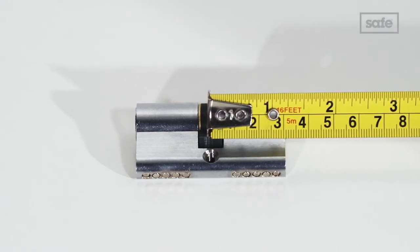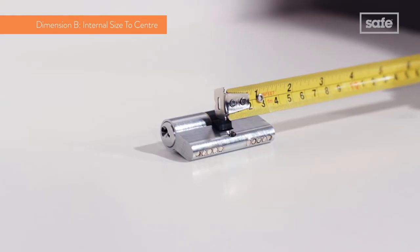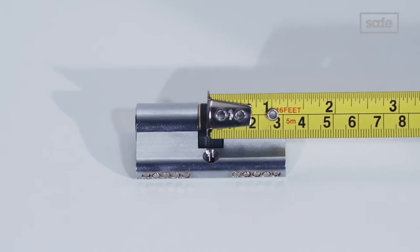Next measure from the centre to the right side. This is the internal size to centre measurement, dimension B, which also measures 30mm.